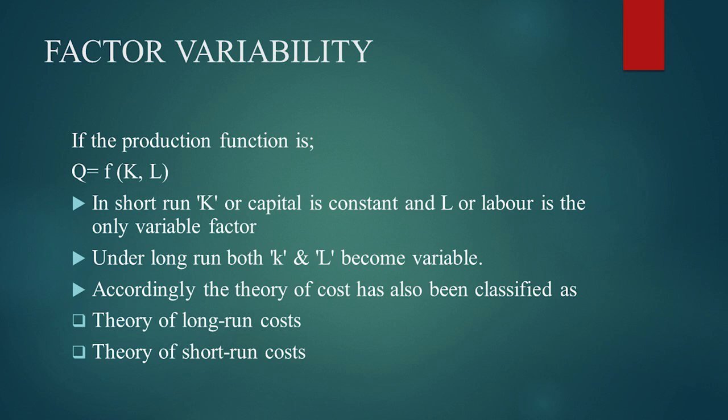Whatever is plant, machinery, or equipment is not going to be changed. It is only labor which varies, and varying amounts of labor give rise to three situations: increasing returns, constant returns, and diminishing returns. Under the long run, both K and L become variable — capital and labor both become variable. So the theory of cost has also been classified as theory of long run costs and theory of short run costs.